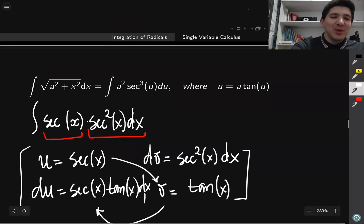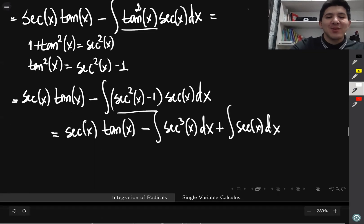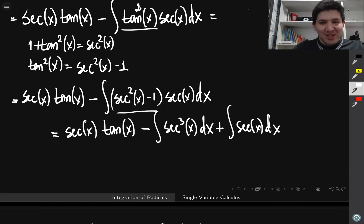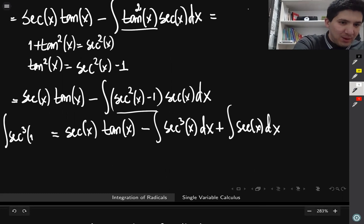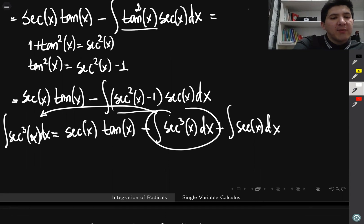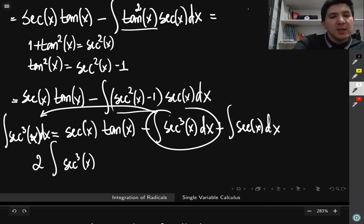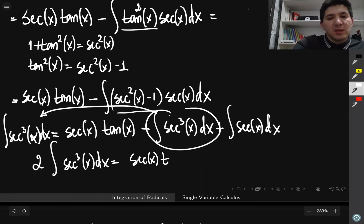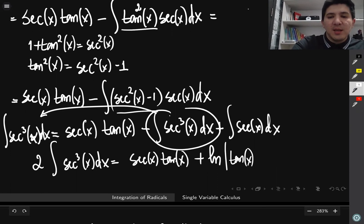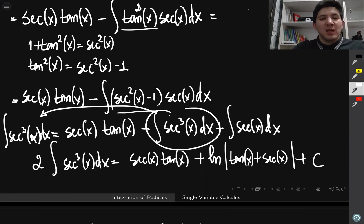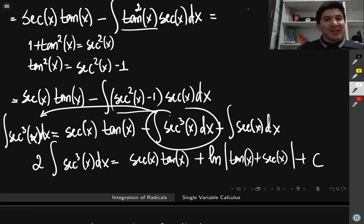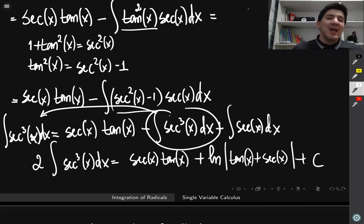We started with the integral of secant cubed of x, and we've obtained an equation containing that same integral on the right side. Moving the secant cubed integral to the left-hand side, we get 2 times the integral of secant cubed of x dx equals secant(x)·tangent(x) plus the integral of secant of x dx, which equals ln|tangent(x) + secant(x)| plus constant. Dividing both sides by 2 gives us the integral of secant cubed of x.